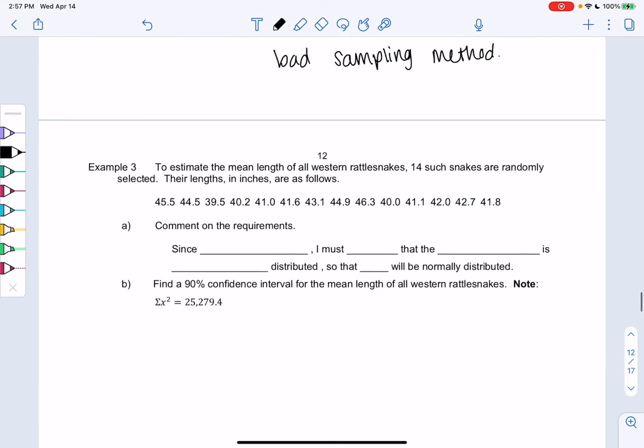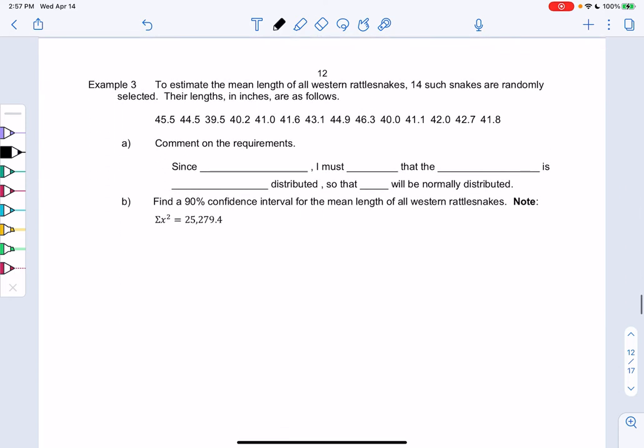So let's try a full confidence interval now. So we want to estimate the mean or average. So we know we're in mean land. So no proportions. So really step one of all these problems, I try to decide where are we? What are we working with?